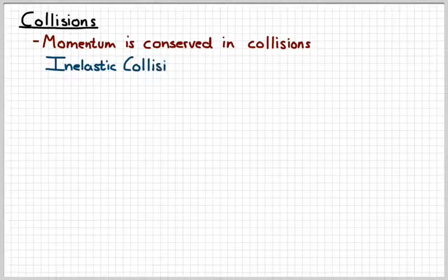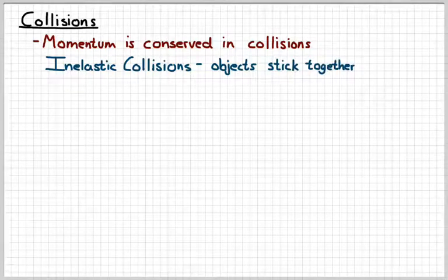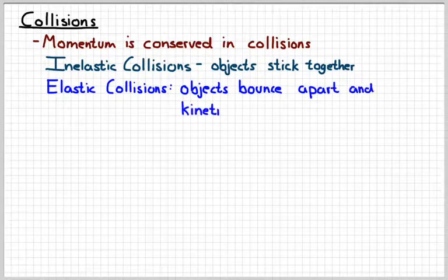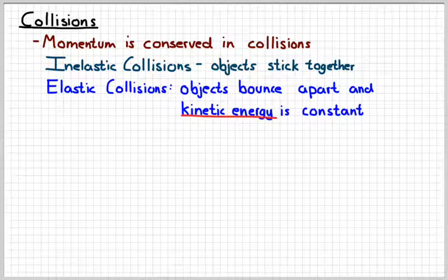Last video we looked at inelastic collisions — that's where the objects stick together or lock together after the collision. Today we're going to look at elastic collisions. In an elastic collision there are two things that happen: one, the objects bounce apart, and two, the kinetic energy of the system is constant. You have to have both of those to have an elastic collision.